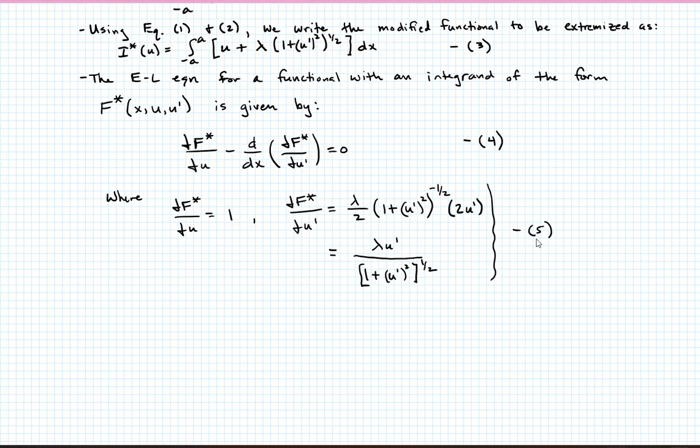So we're going to substitute equations 5 into equation 4, and we're going to end up with the 1 minus d by dx lambda u prime over 1 plus u prime, the quantity squared, to the 1 half. That equals 0. This is equation 6.